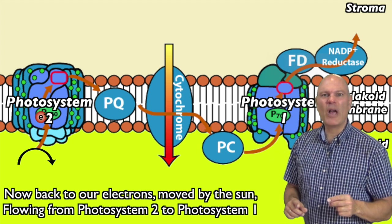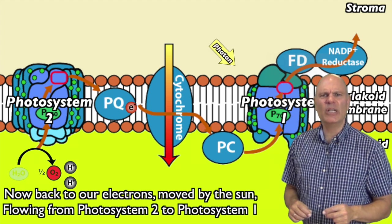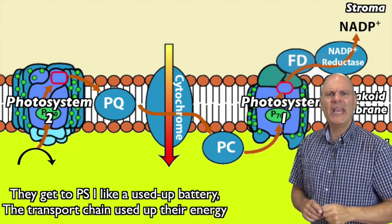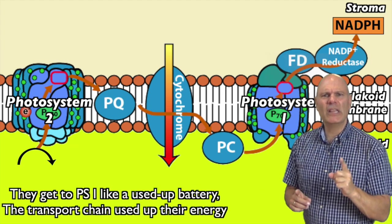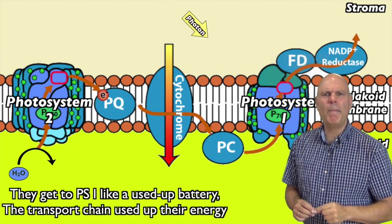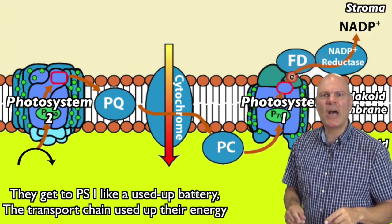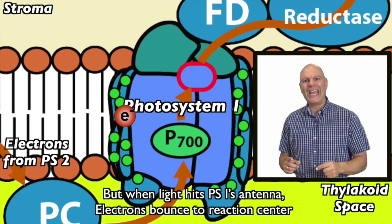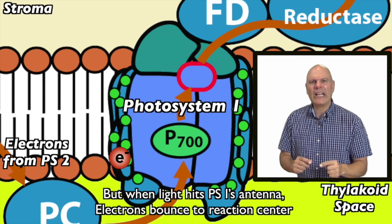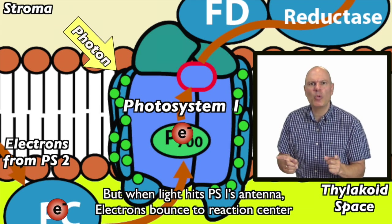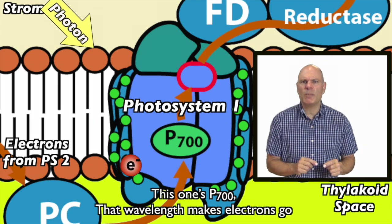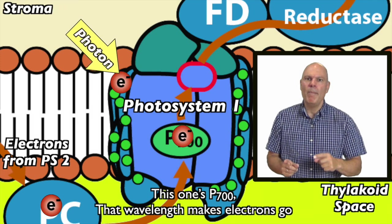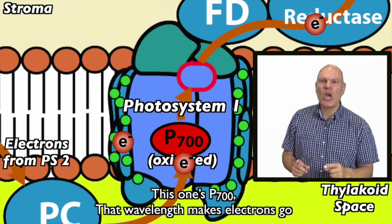Now back to our electrons moved by the sun, flowing from photosystem 2 to photosystem 1. They get to PS1 like a used up battery — the transport chain used up their energy. But when light hits PS1's antenna, electrons bounce to reaction center. This one's P700, that wavelength makes electrons go.